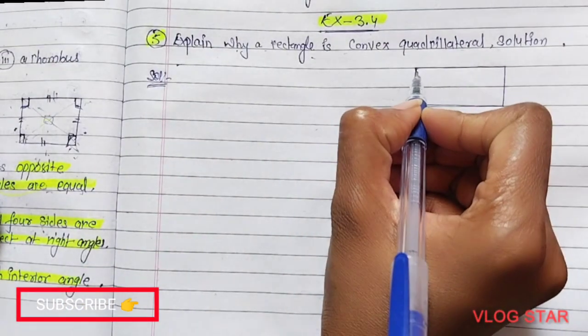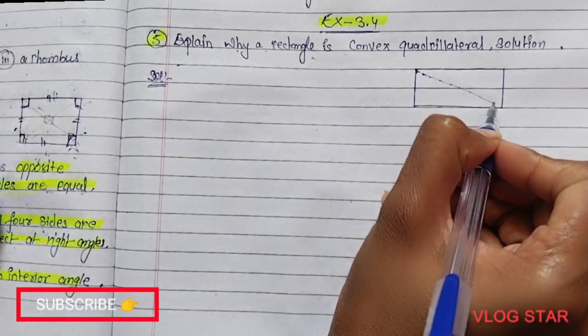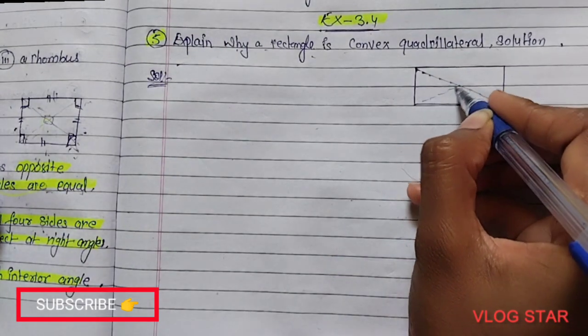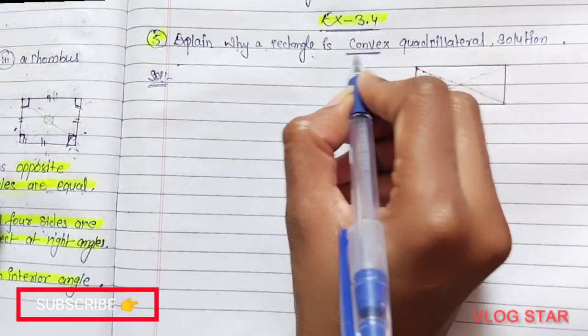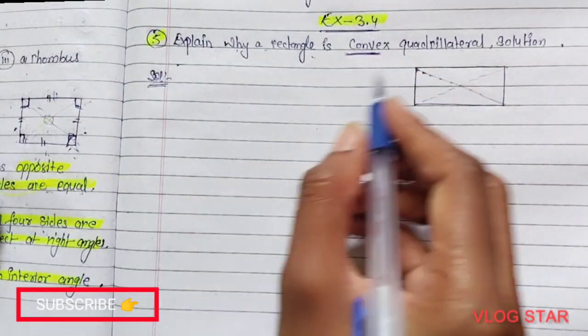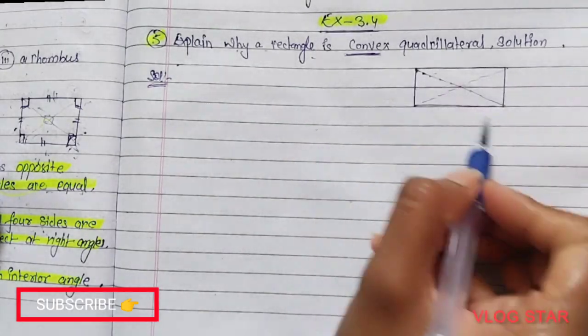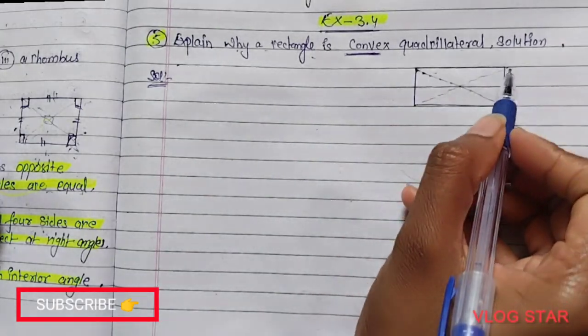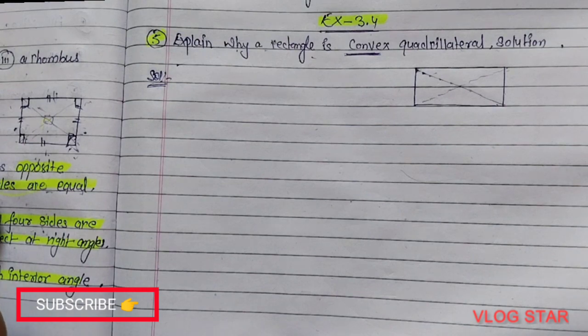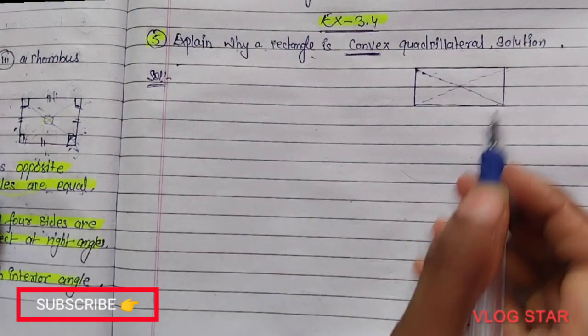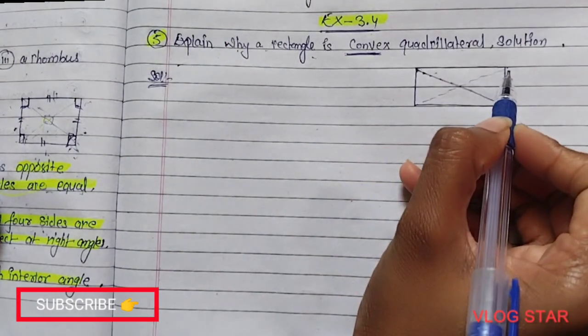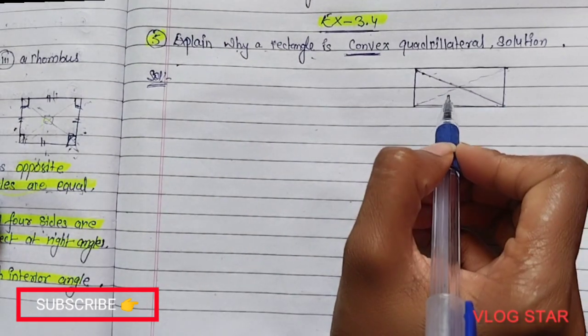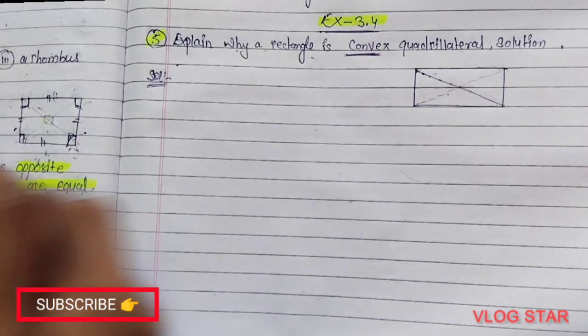A rectangle has two diagonals that bisect each other. But the definition of convex says that the diagonals will be in the interior of its quadrilateral, means these diagonals are inside of this quadrilateral.